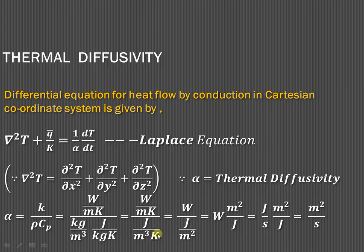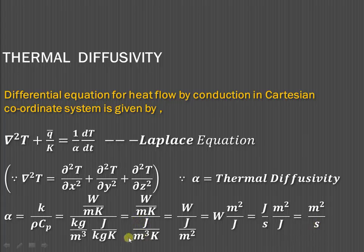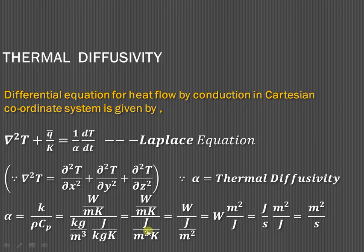Simplifying further, Kelvin cancels with Kelvin and one meter cancels, leaving meter squared. So the units become watt times meter squared per joule. Since watt is joule per second, joule cancels and we get meter squared per second. The physical significance is that the numerator represents the ability of the material to conduct heat — that is thermal conductivity — while the denominator represents the thermal energy storage of the material per unit volume per unit change in temperature. So thermal diffusivity is the ability to conduct heat versus the ability to store heat.